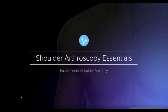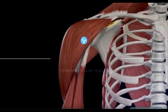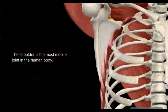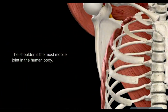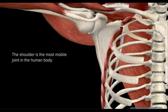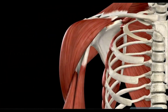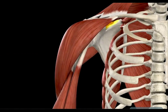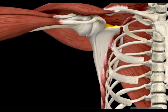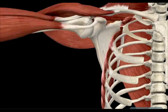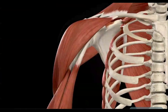This section covers the anatomy of the shoulder as it pertains to arthroscopy. The shoulder is the most mobile joint in the human body. However, with this amount of mobility, there is a sacrifice of stability. For the shoulder to remain stable, many anatomic factors come into play.